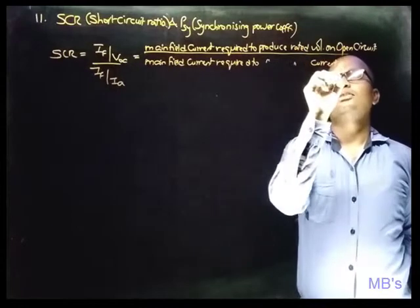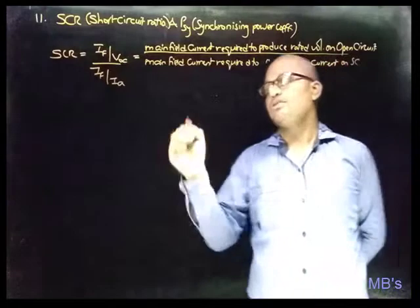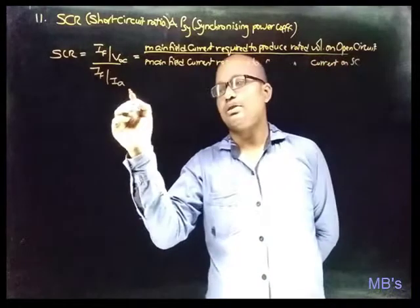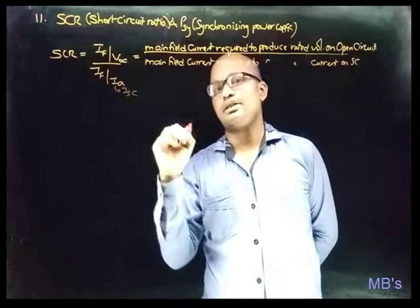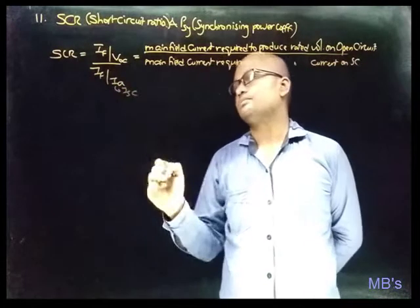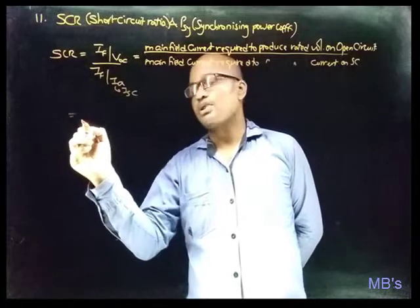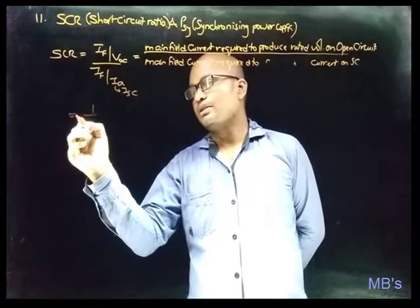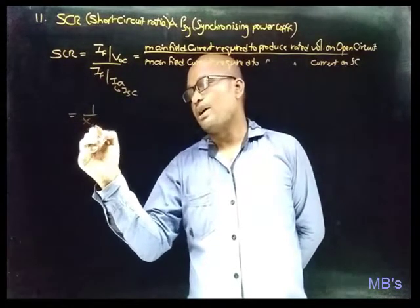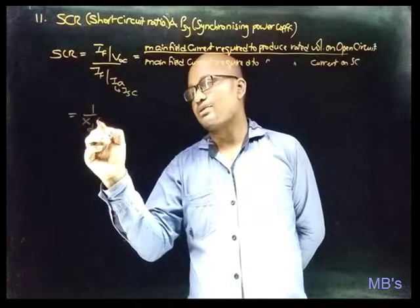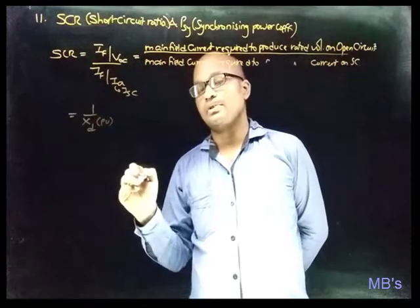Here we can represent IA with ISC, and the short circuit ratio is given by 1 divided by the direct axis reactance in per unit.